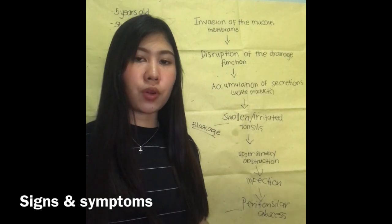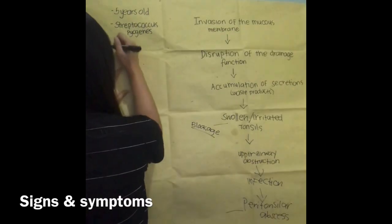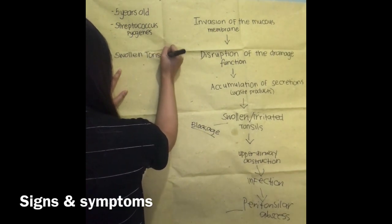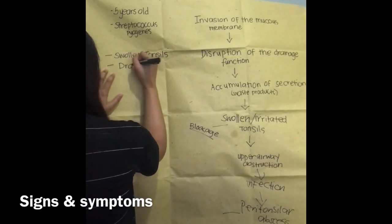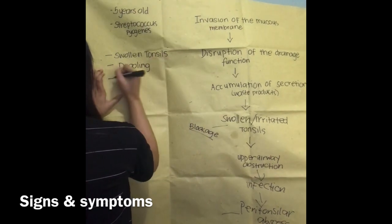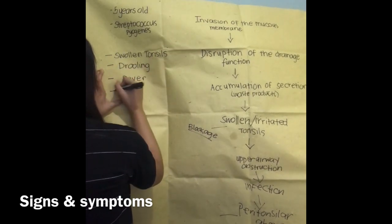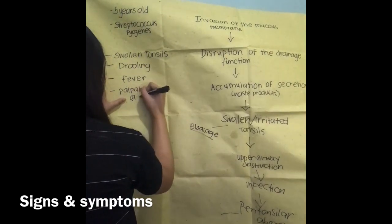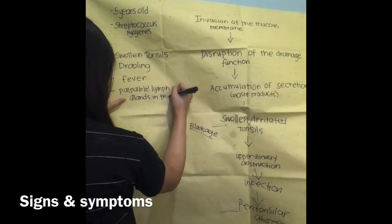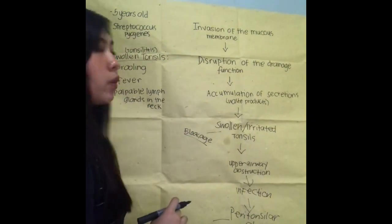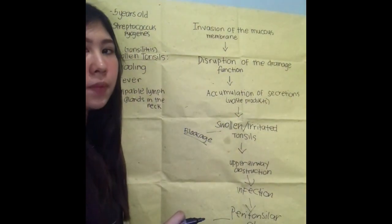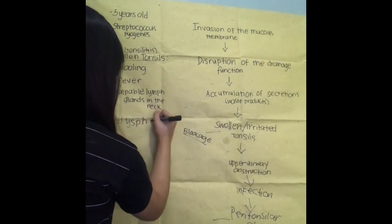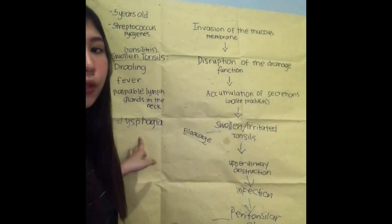Here are the common signs and symptoms of tonsillitis in pediatrics: drooling, fever, palpable lymph glands in the neck, and of course dysphagia, or difficulty swallowing.